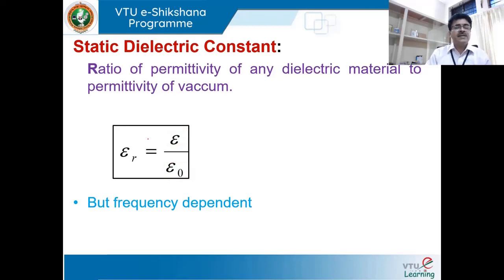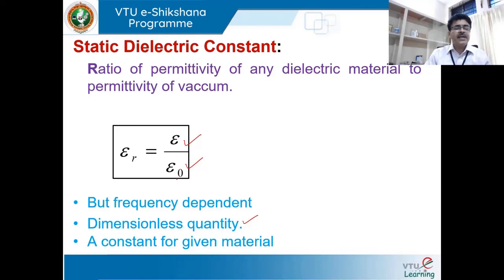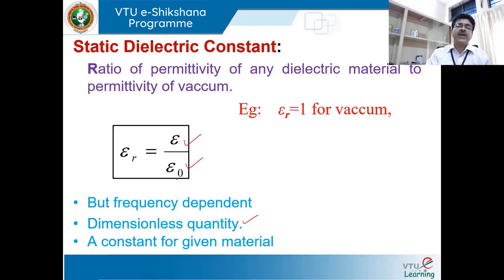The dielectric constant is frequency dependent, it is a dimensionless quantity (since permittivity units cancel), and it is a constant for a given material. For vacuum, ε_r = ε / ε₀ = 1, which is the least possible dielectric constant. Air has a dielectric constant very close to that of vacuum, approximately 1.00056.